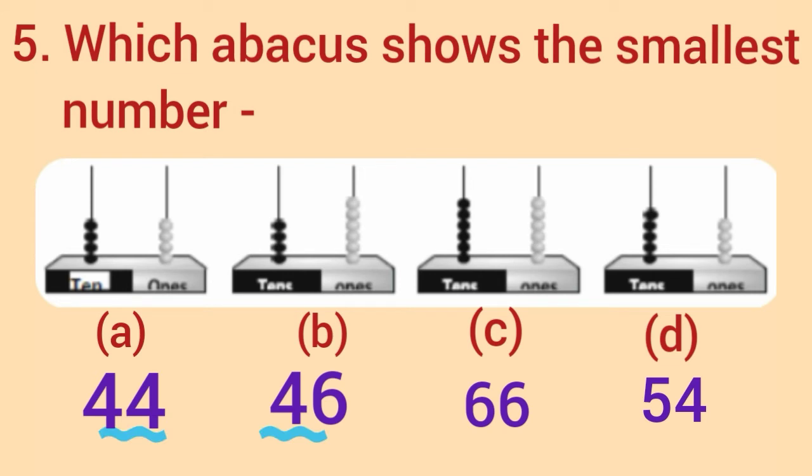Now, we see the smallest digit at one's place. Yes, number 44 has the smallest digit at one's place. So, it is the smallest number. And, we put a tick at option A.